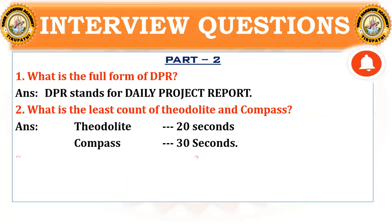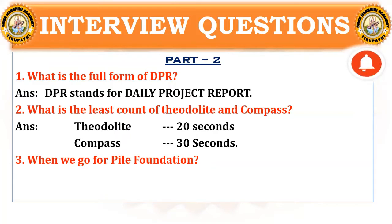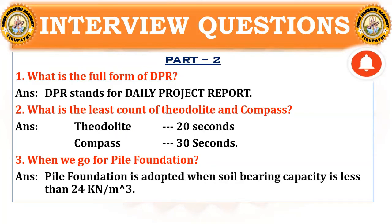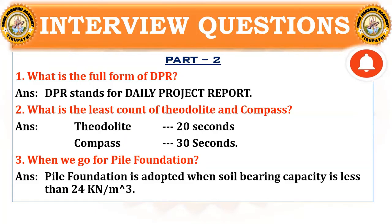Coming to the third question: When do we go for pile foundation? Pile foundation is adopted when the soil bearing capacity is less than 24 kN per meter cube. Whenever the soil bearing capacity is less than 24 kN/m³, we adopt the pile foundation.